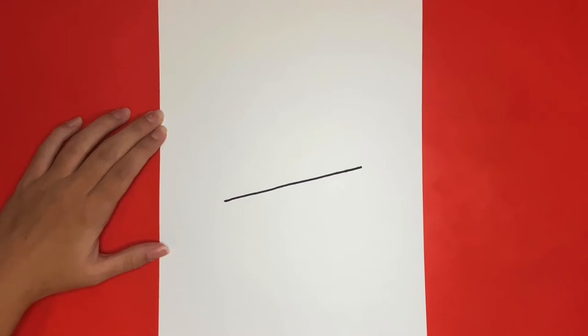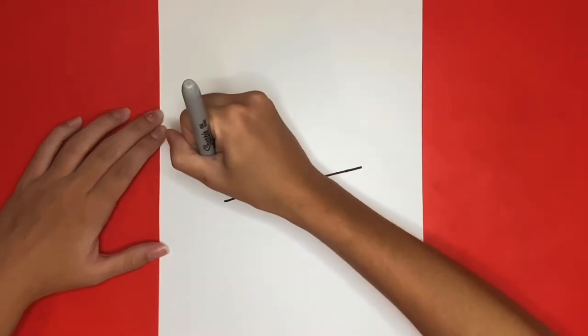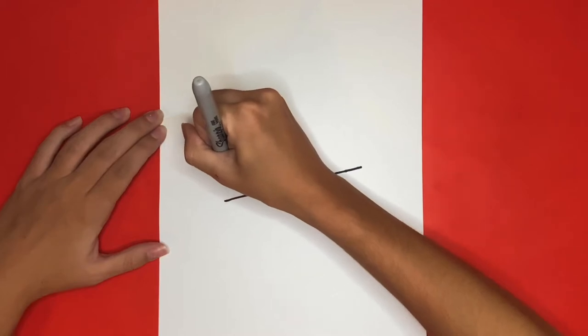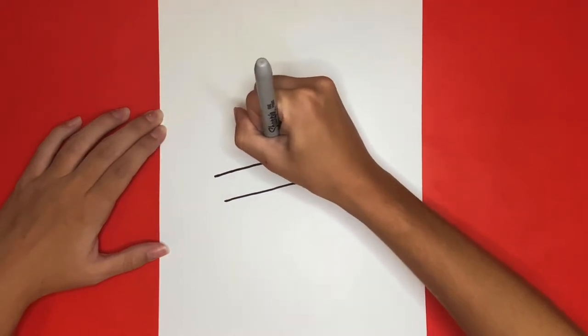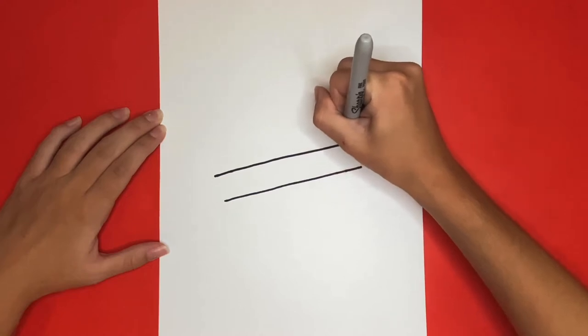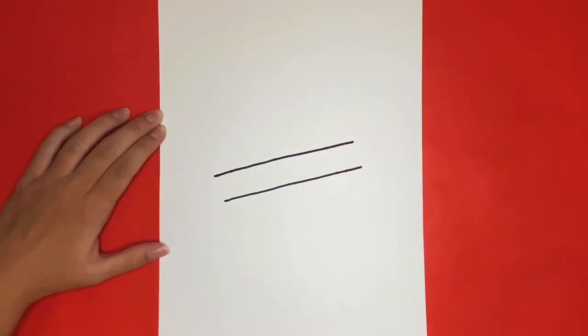Then above that line we are going to draw another diagonal line that's parallel to the one we just drew. Next we are going to connect the top and bottom line on either sides with a small curved line.